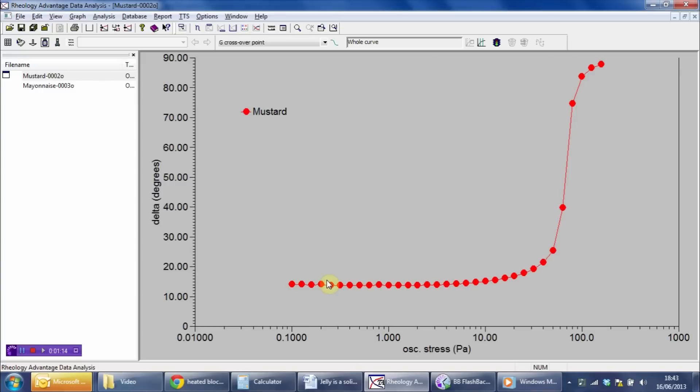What we can see with the mustard here is that we have a plateau at low stresses, at a low phase angle, and we're getting values of around about 14 degrees along here.